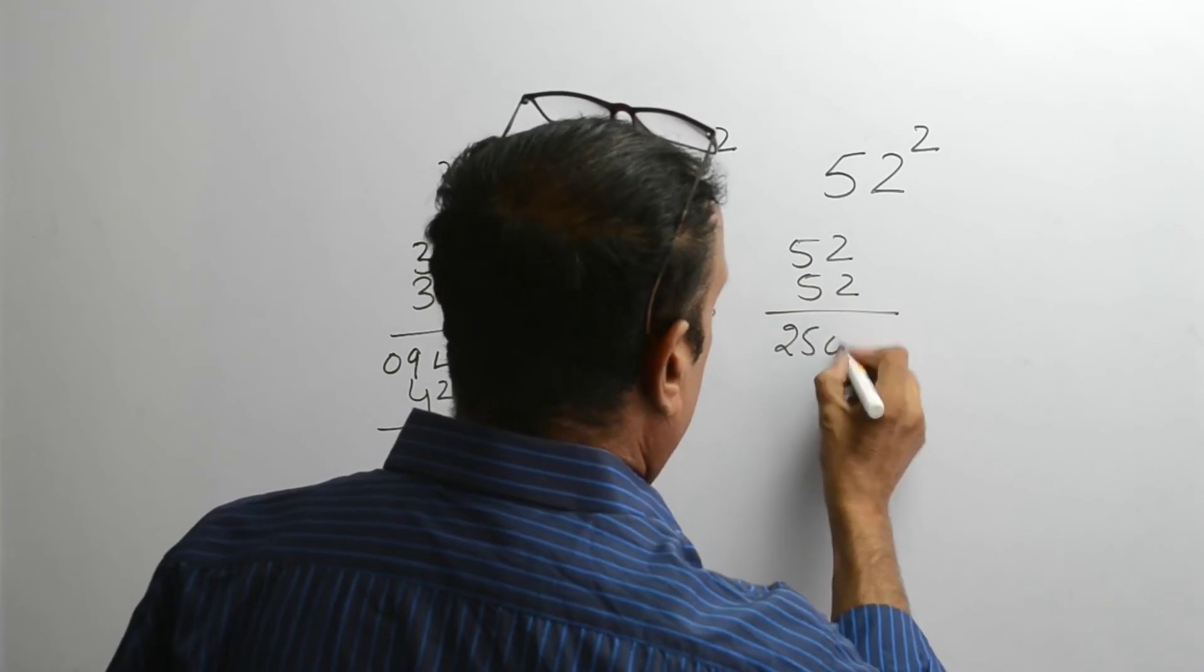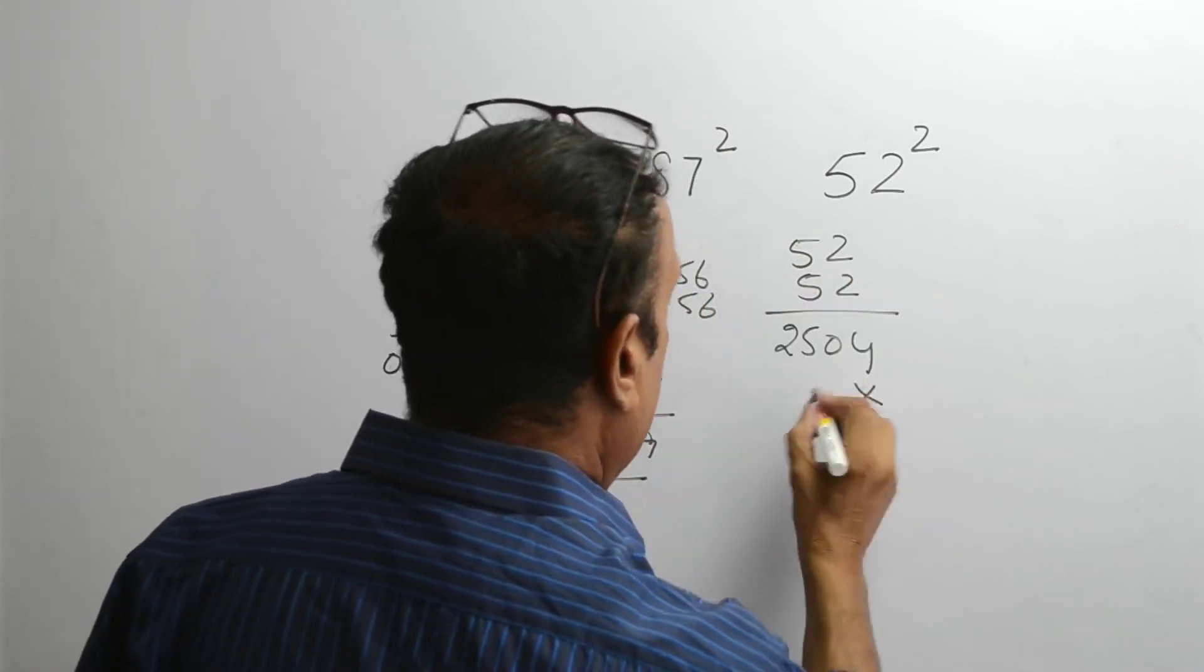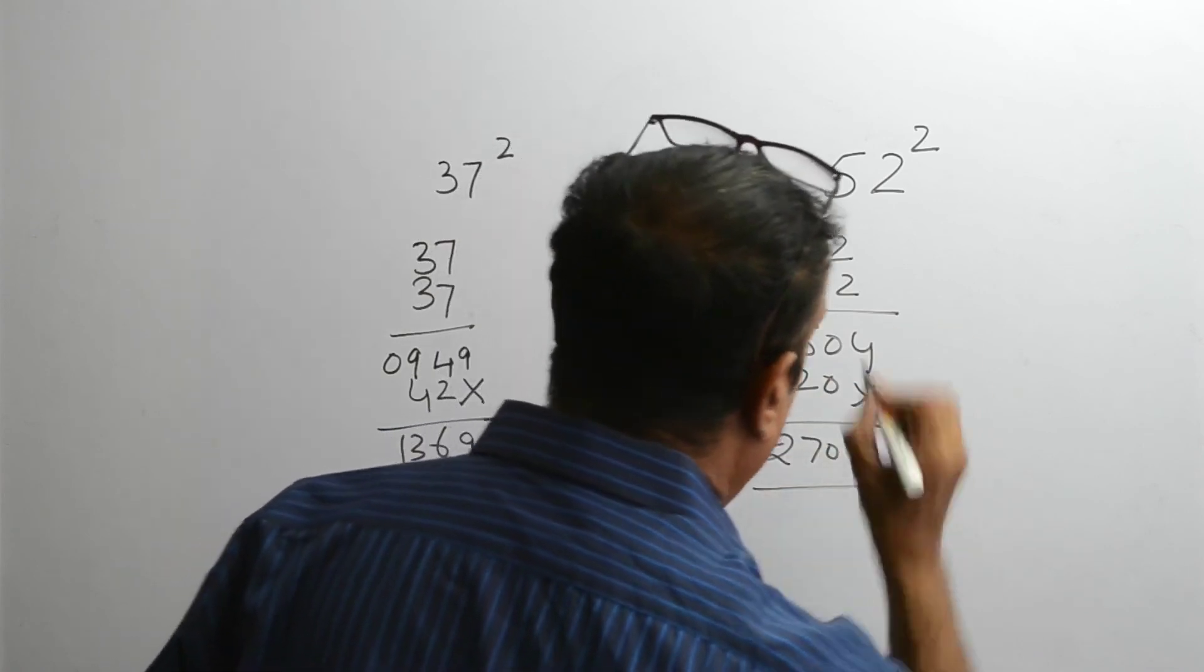2504, a 2 digit number, so 10 and 10, 20, 2704 is the answer.